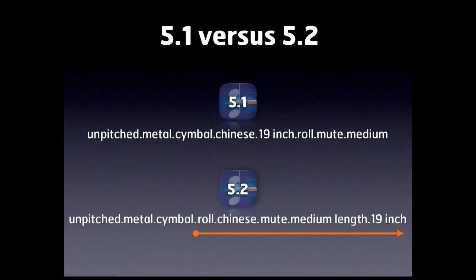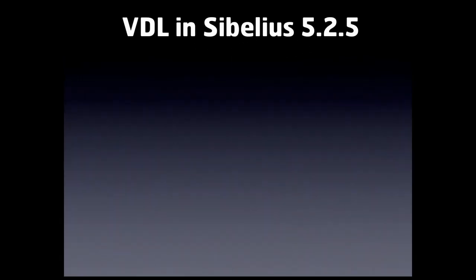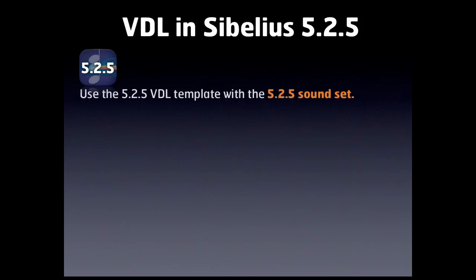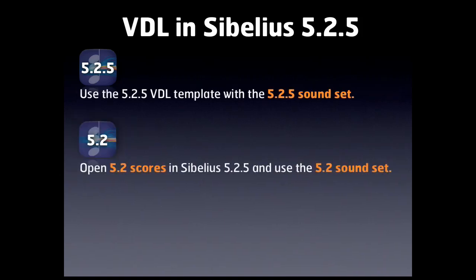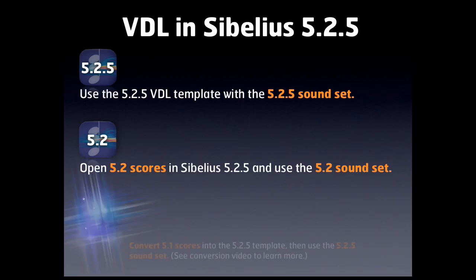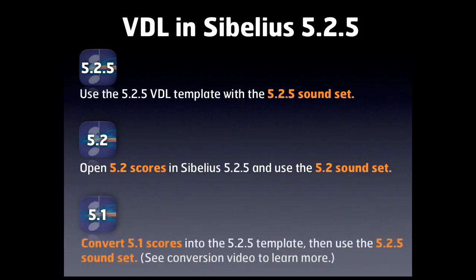This won't really affect your process when writing in Sibelius, but we feel it's helpful for you to know about some of the more complex stuff taking place under the surface. In the 5.2.5 template, the Sound ID structure has changed again, but only in terms of certain things like key switches and controllers. When using the 5.2.5 template, it'll be important to use the 5.2.5 sound set. Sibelius 5.2 scores will operate fine in 5.2.5 as long as you're using a 5.2 sound set in your playback configuration. Older scores created with the 5.1 template will need to be converted to the 5.2.5 format, which we'll cover in a later video.